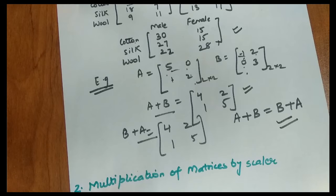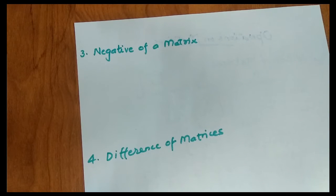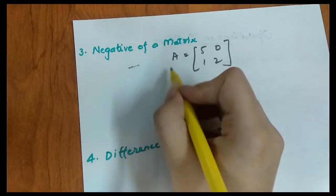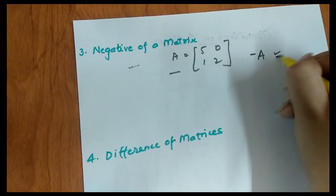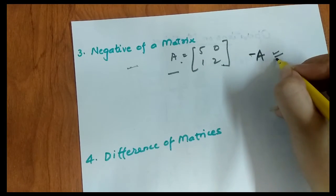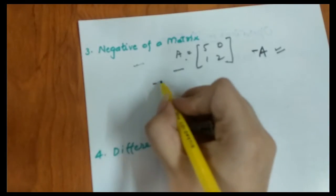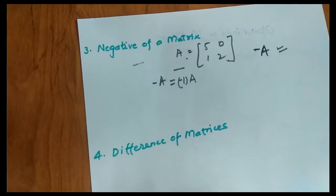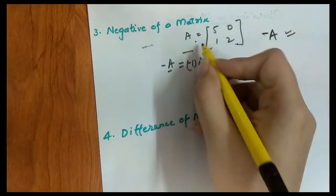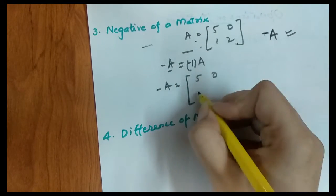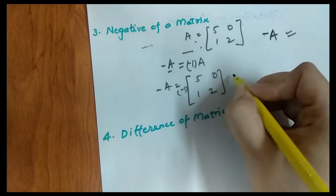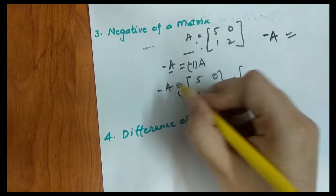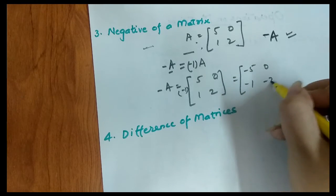I hope you understand the addition operation for matrices. Now let's look at the negative of a matrix. If we are given a matrix A = [5, 0, 1, 2], the negative of A — that is, minus A — is simply matrix A multiplied by −1. So if an element is negative, multiply by −1. Therefore minus A = [−5, 0, −1, −2].